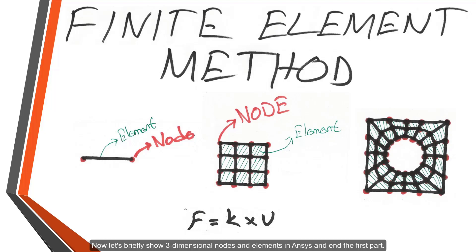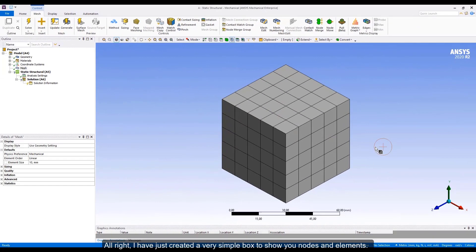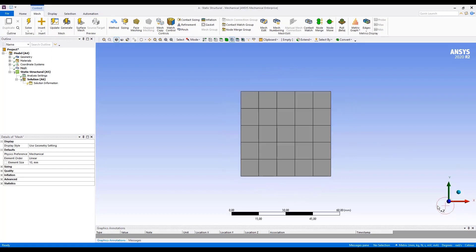Now, let's briefly show three-dimensional nodes and elements in ANSYS and end the first part. Alright, I have just created a very simple box to show you nodes and elements. Let's look at the view like that and let's assume it's a 2D square. From here, selection should be nodes. We'll learn these selections later. Click the corner points and you'll see the nodes. These green boxes are nodes. If you hit ctrl command and drag your mouse, you can select some nodes more than one. These are the nodes on the model.